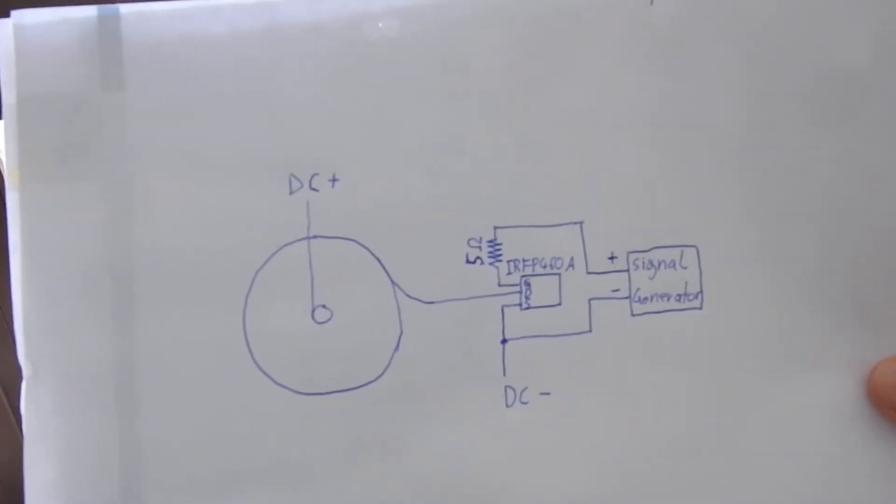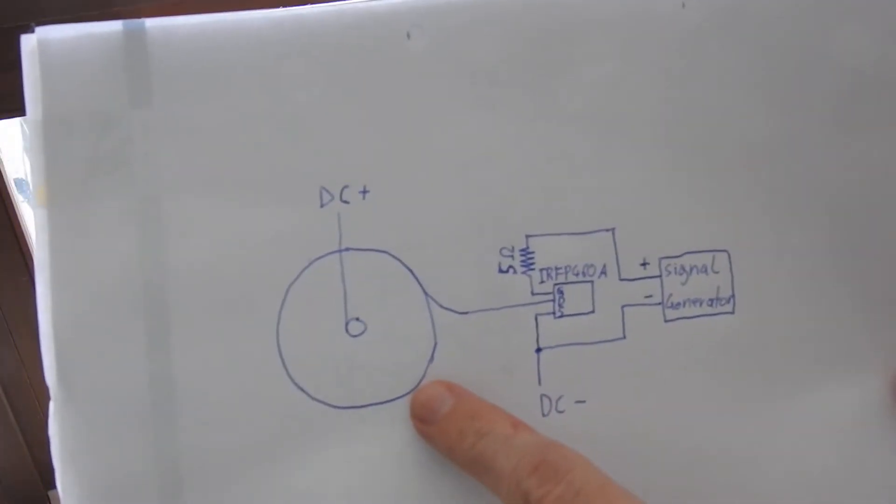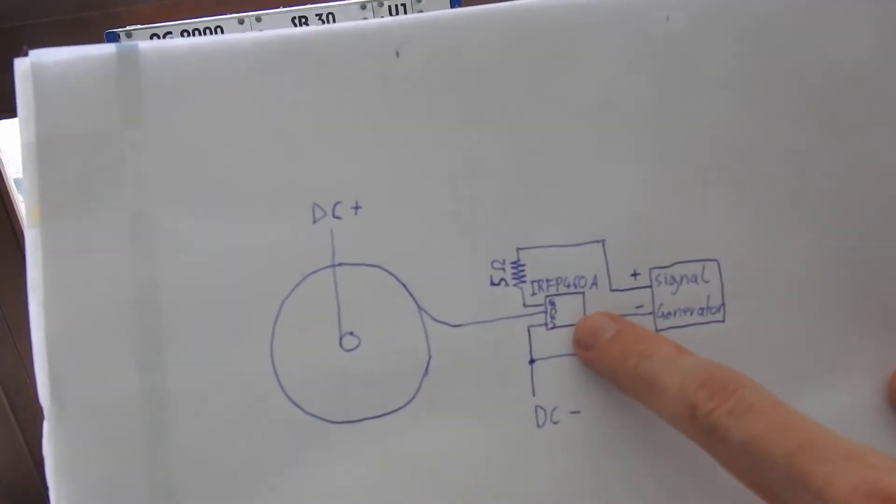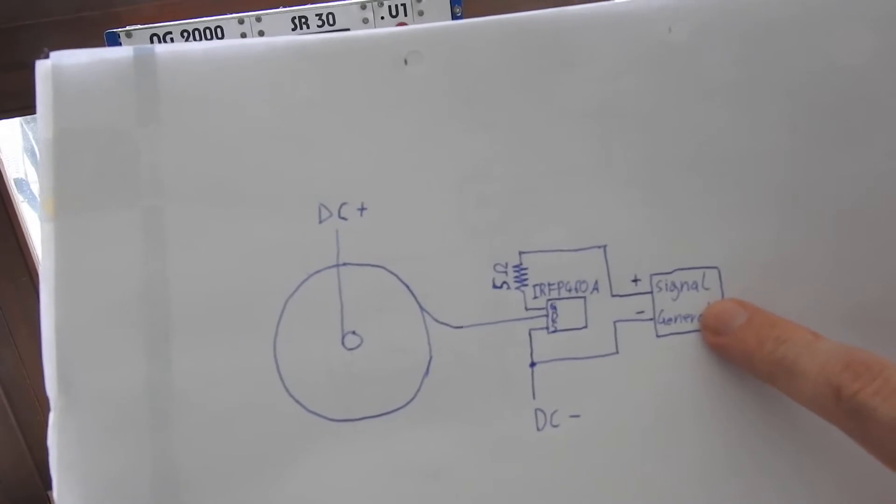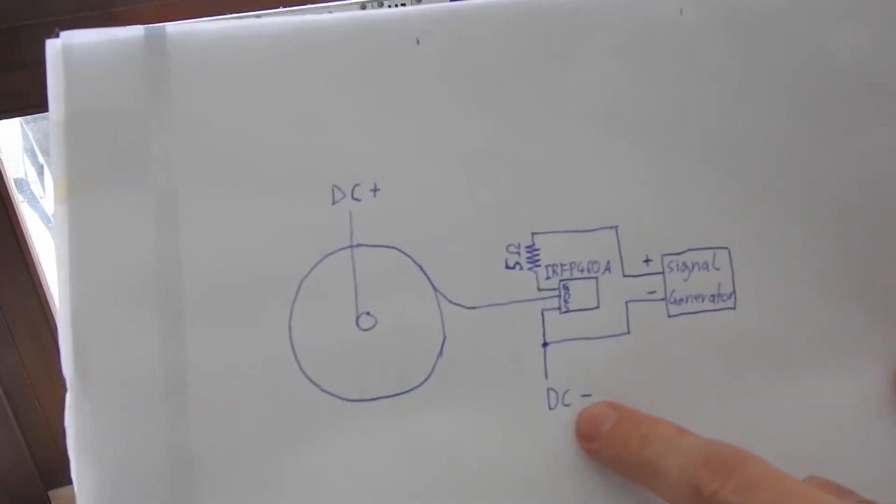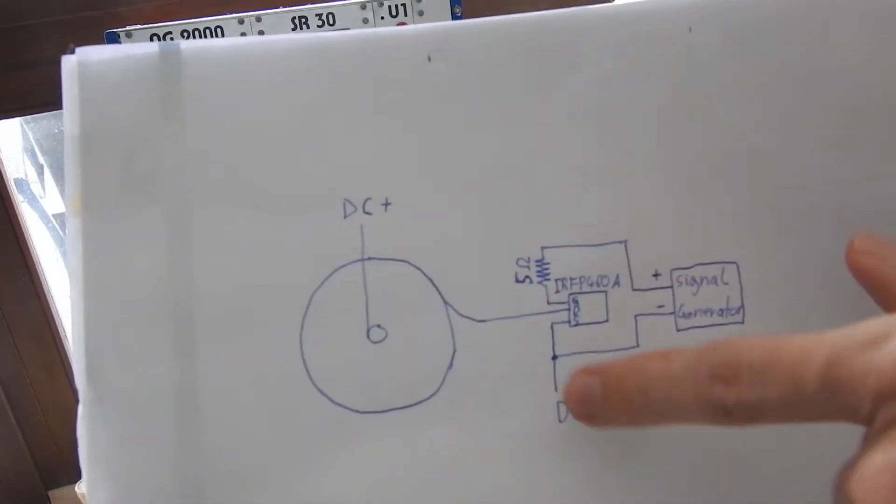It is very simple. We have one bifilar flat coil, one MOSFET or transistor, and a signal generator and a power supply here, plus and minus.